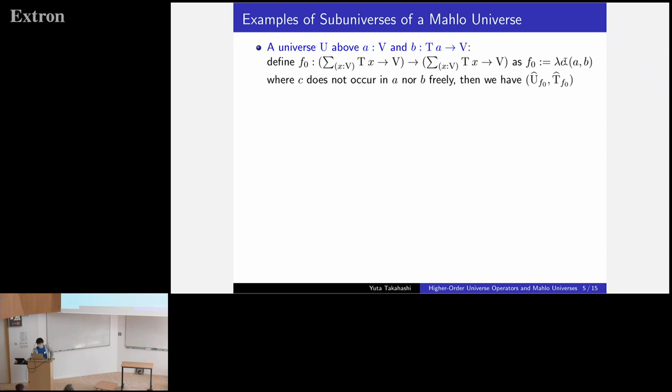Then, we have this subuniverse. And this subuniverse is just a universe containing this family AB because we used a dummy variable here. Let me skip this equation.